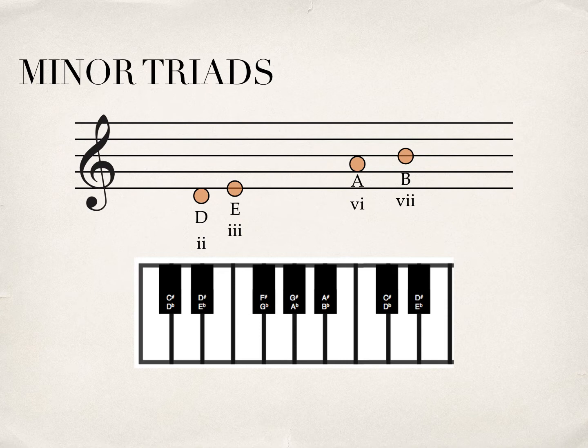Let's add our thirds on top of each root pitch. So for D, I skip a pitch — that's E — and I go to F. I skip G and go to A. Same for E, same for A, and same for B. There we have it — there are our triads.